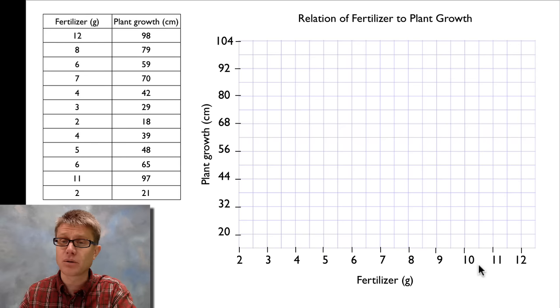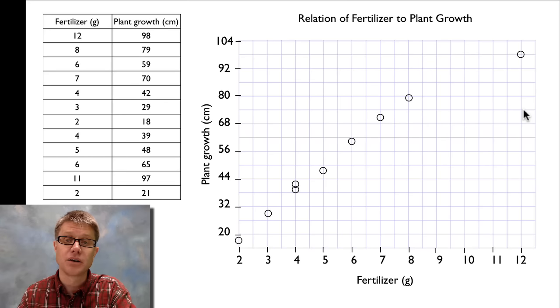The next thing I want to do is I want to graph my data. What's my first data point? Fertilizer of 12. So I'm going to go all the way over here to 12, and then I'm going to have plant growth of 98. Well if this is 92 that means this is 98, so my first data point should be right there. Now I'm going to put all the other data points from my graph. You can see that there were some times when I had the same amount of fertilizer but two different types of plant growth. And that's fine.